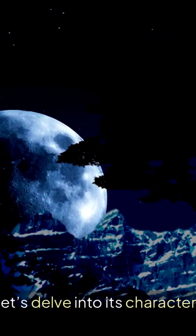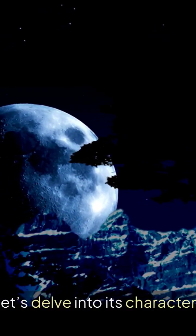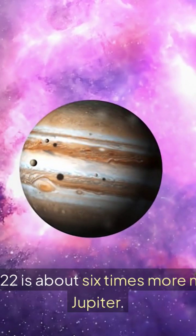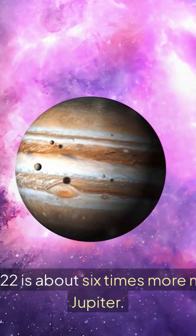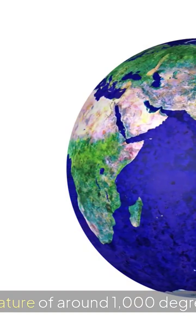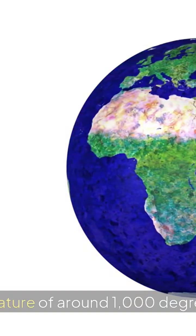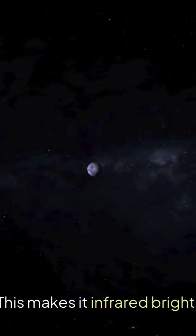Now, let's delve into its characteristics. PSO J311.522 is about 6 times more massive than Jupiter. It has a temperature of around 1000 degrees Fahrenheit. This makes it infrared bright.